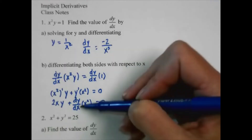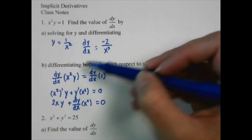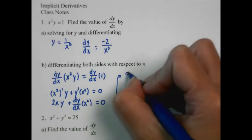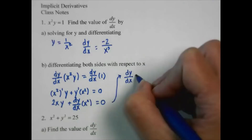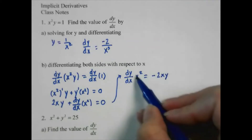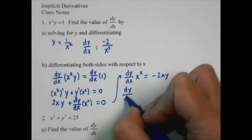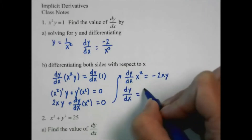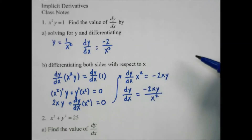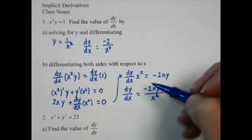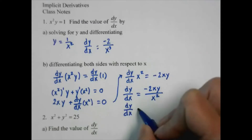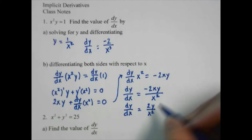Now what we need to do is solve for dy/dx. We want dy/dx equals something. So I'm going to subtract that and then divide. The x is reduced, so I have 2y over x squared.